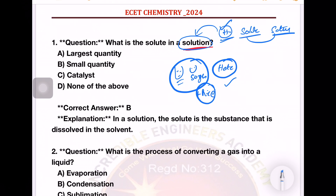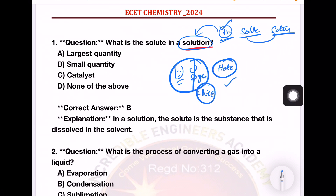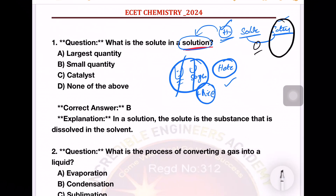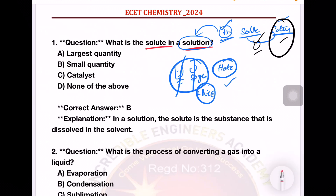The solute is the smallest quantity in a solution. For example, sugar is the solute and water is the largest quantity — the solvent. The solute is a solid. So the right answer to 'What is the solute in the solution?' is option B: smallest quantity.